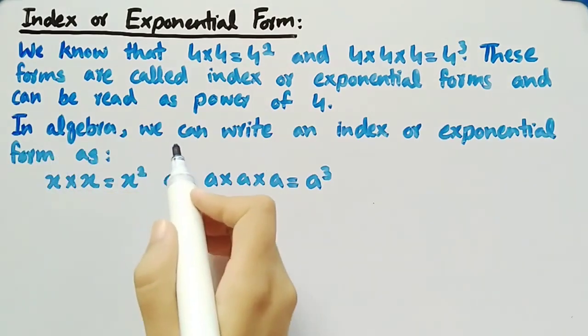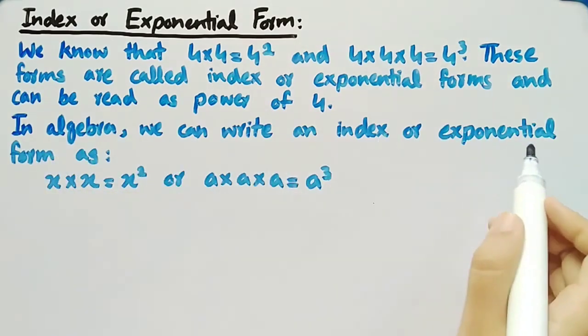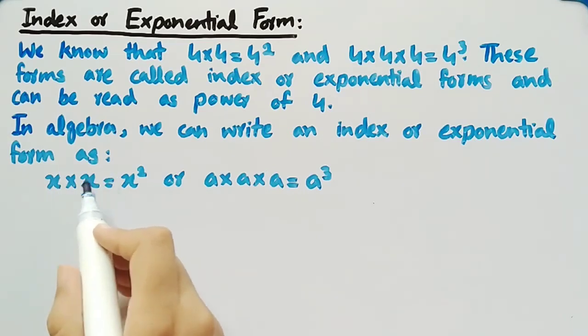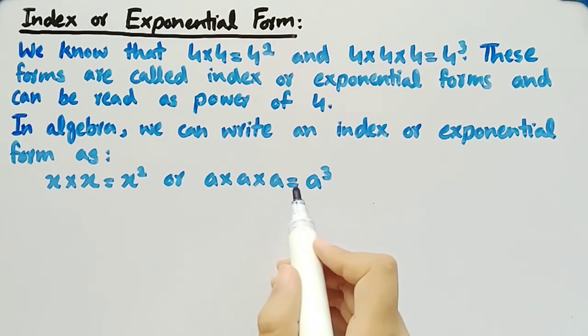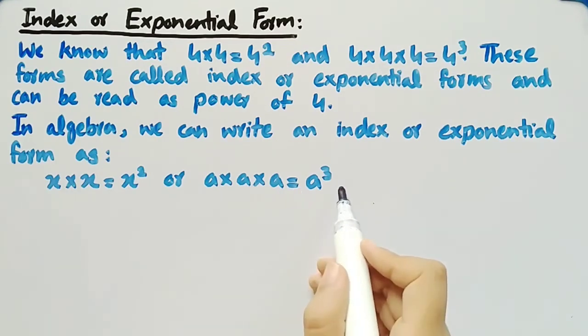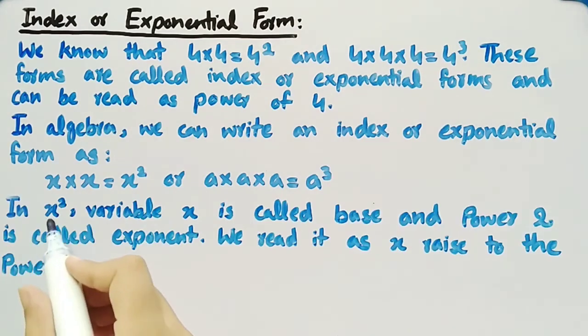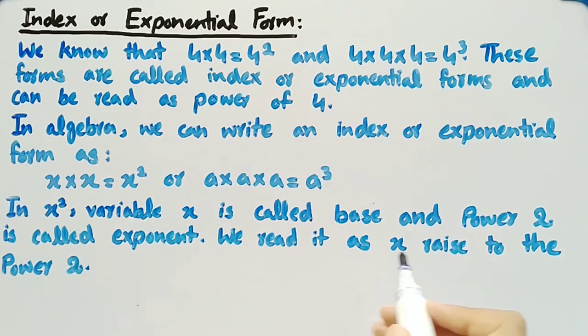In algebra, we can write an index or exponential form as x multiplied by x is equal to x square, or a multiplied by a multiplied by a equal to a cube. In x square, variable x is called base and power of 2 is called exponent. We read it as x raised to the power of 2.